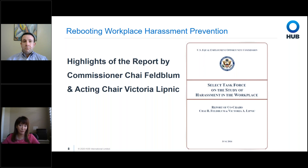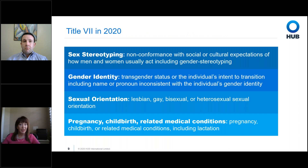The EEOC was ahead of the game on sexual orientation and transgender as a protected class under Title VII. Two years ago, they issued a report from a task force on harassment in the workplace specifically stating that the EEOC deems harassment and discrimination on the basis of transgender status, sex orientation, and sex stereotyping as protected by Title VII. Today, with Bostock, sex stereotyping, gender identity, sexual orientation, and pregnancy are all protected under Title VII.